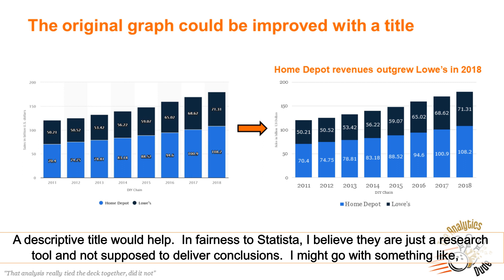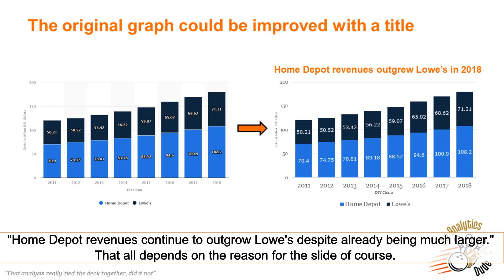A descriptive title would help. In fairness to Statista, I believe they're just a research tool and not supposed to deliver conclusions like with a descriptive title. If our title fits, I might go with something like 'Home Depot revenues outgrew Lowe's in 2018, despite already being much larger.' That, of course, depends on the reason for the slide.